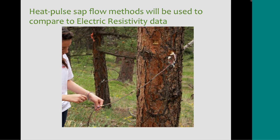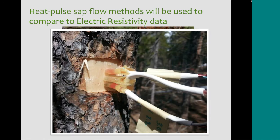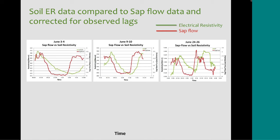We had the sap flow data in order to have something to compare our electrical resistivity data from the soil and determine if we were seeing similar patterns between both datasets. The setup was a heater in the center that sends a heat pulse into the sap of the tree, and two thermocouple sensors that measure the temperature in the sap inside the tree. We relate the heat dissipation to the velocity of the sap, which is then related to the transpiration of the tree. Here we have the data collected for the month of June, which is what I focused on. Throughout these months, you can see that both the soil resistivity, which is the green line, and the sap flow, which is the red line, have a similar pattern.